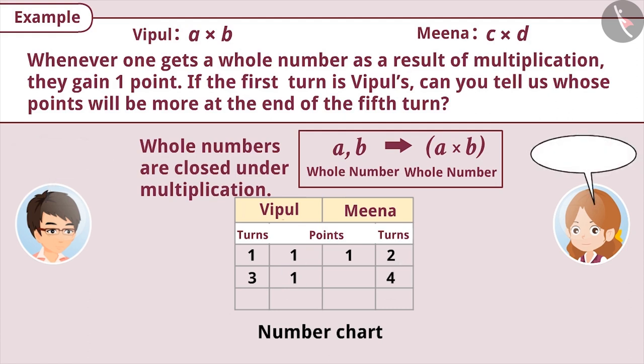After this, Meena picked two numbers 2 and 1 and multiplying them gave her the result 2, which is a whole number. So, she will get one point again.